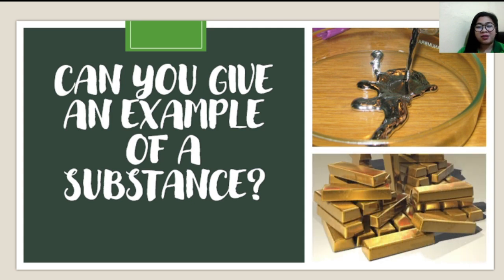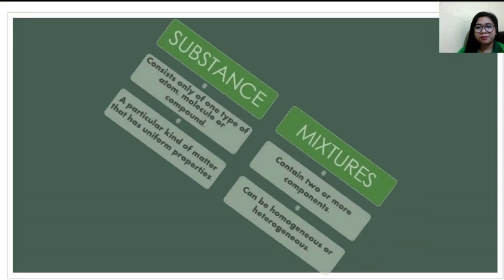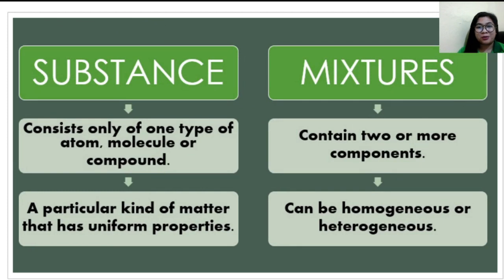Now let's compare the two. A substance consists only of one type of atom, molecule, or compound, and has uniform and definite properties. A mixture, on the other hand, contains two or more components and can be homogeneous or heterogeneous.